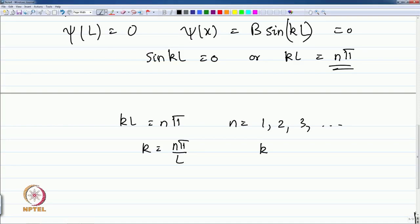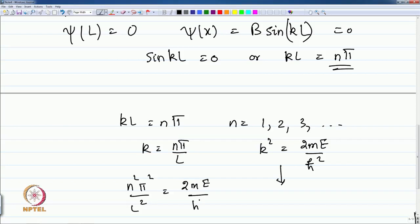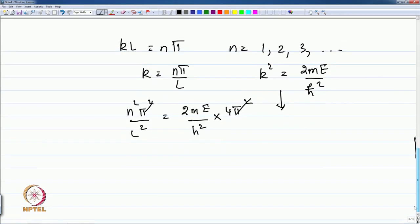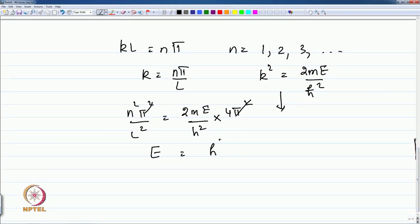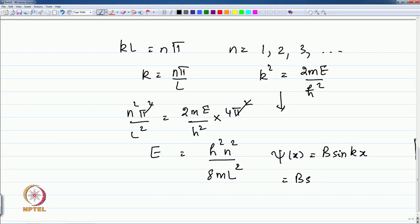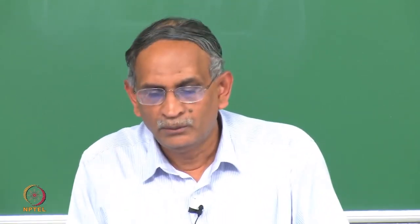Since k² = 2mE/h-bar², we have n²π²/L² = 2mE/h-bar². Rearranging and canceling the 4π² terms, we immediately get the energy: E = h²n²/(8mL²). And the wave function psi(x) = B sin(kx) = B sin(nπx/L), since k = nπ/L. These are the key solutions.